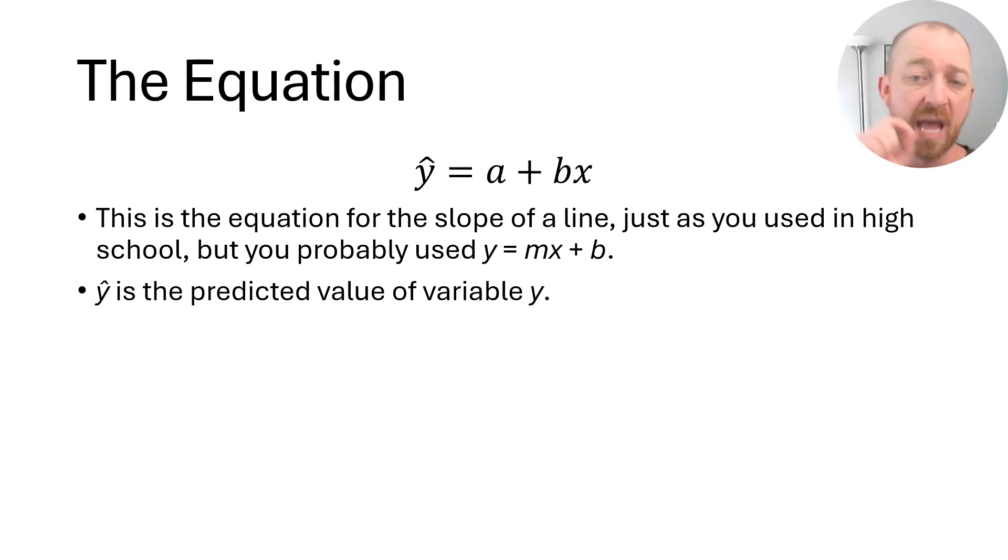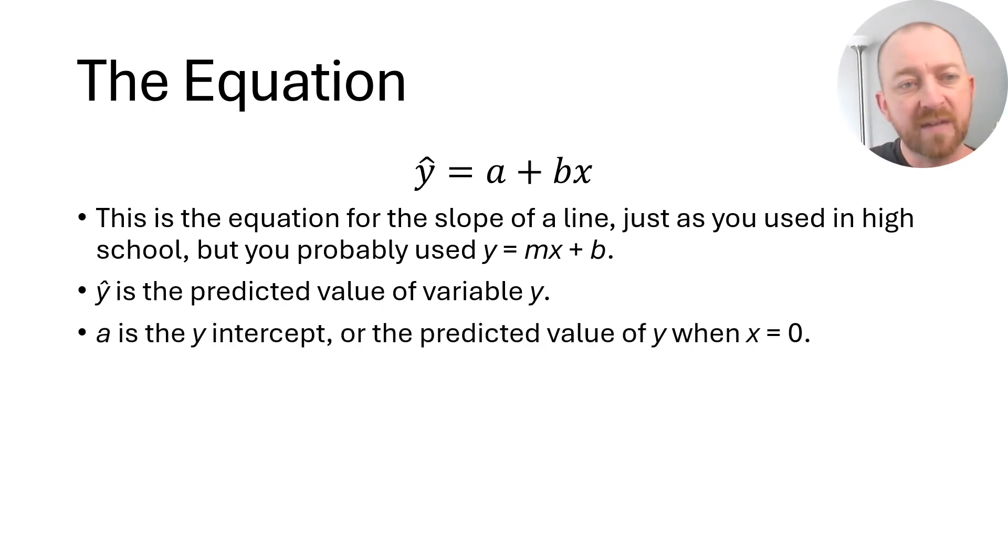Now the Y with the hat: any time you see a Roman letter that has a little hat over it in statistics means that this is a value that we are predicting. It is a predicted value of Y. In this case, we have two variables. We have the variable along the X axis, and there's a variable along the Y axis. That's what we're trying to figure out: the value of Y from the value of X.